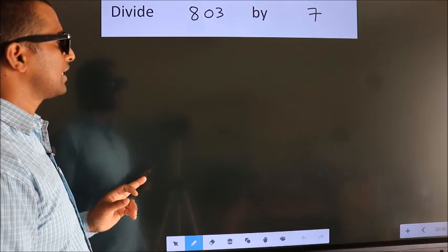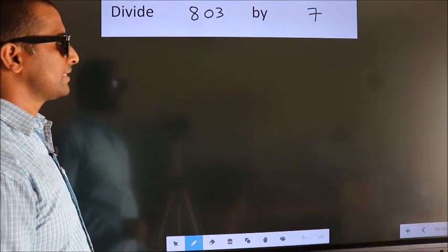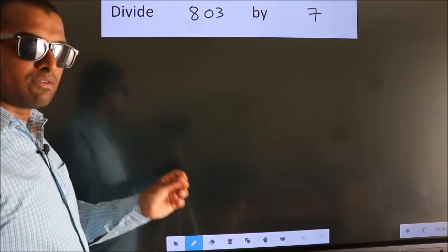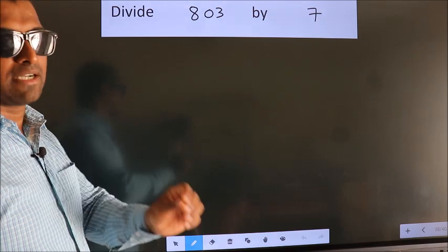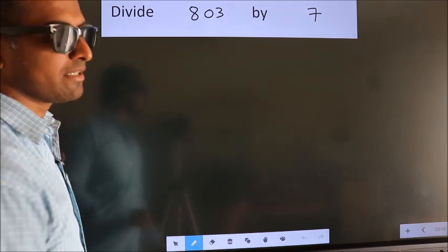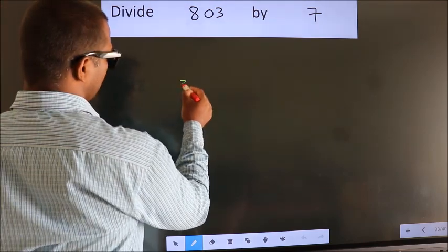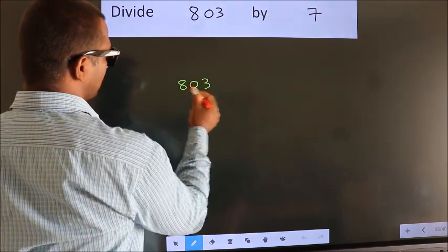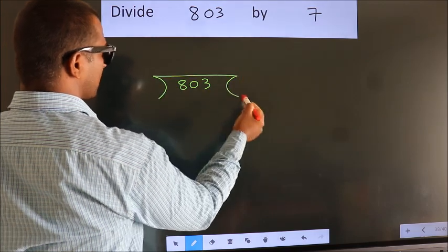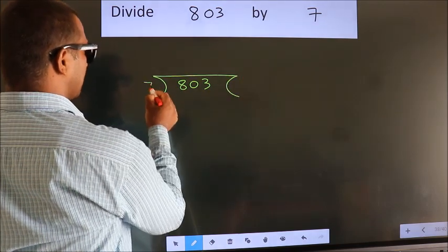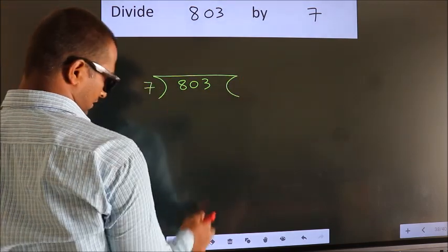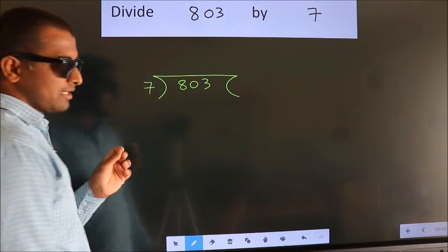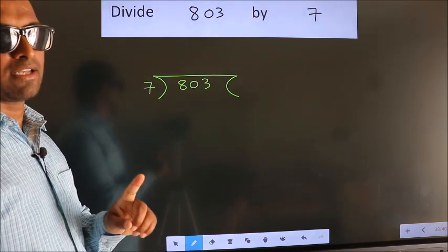Divide 803 by 7. To do this division, we should frame it in this way: 803 here, 7 here. This is your step 1.